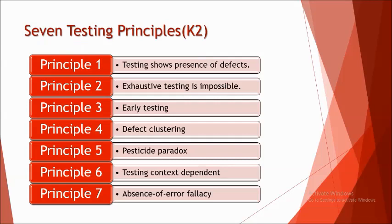Let's look at the seven standard principles of testing. Principle one: testing shows presence of defects. Principle two: exhaustive testing is impossible. Principle three: early testing. Principle four: defect clustering. Principle five: pesticide paradox. Principle six: testing is context dependent. Principle seven: absence of error fallacy.